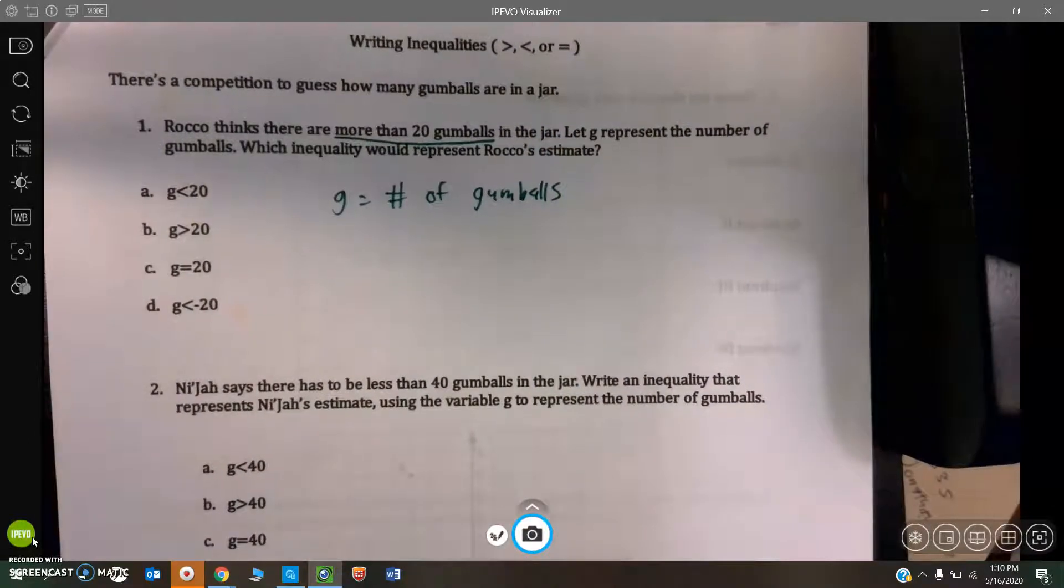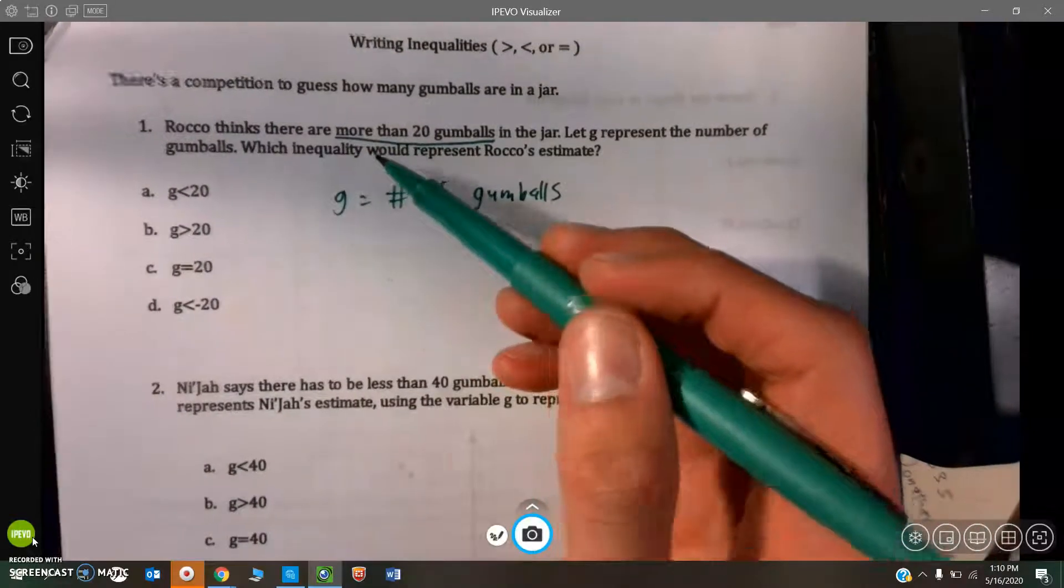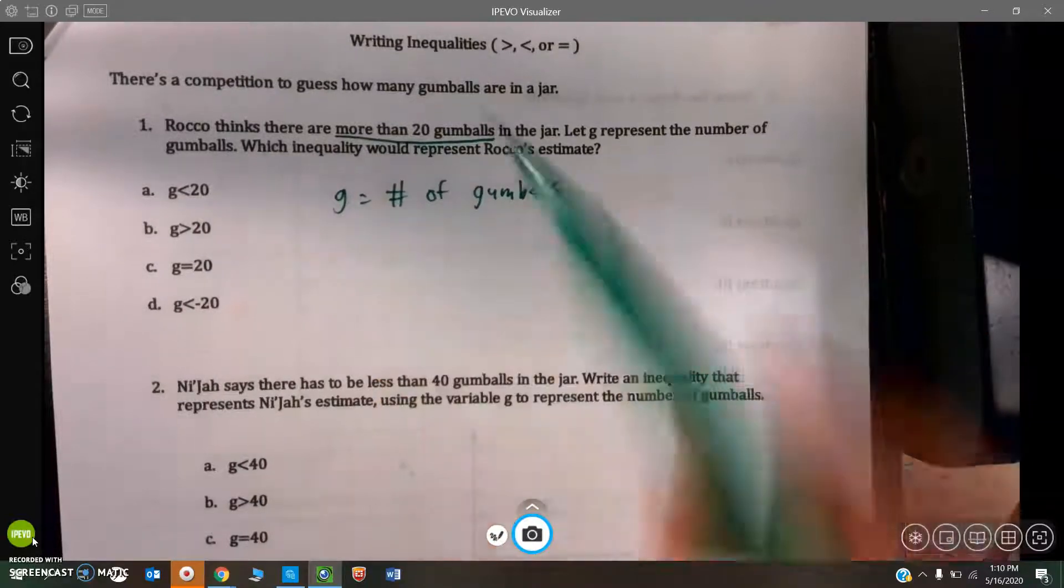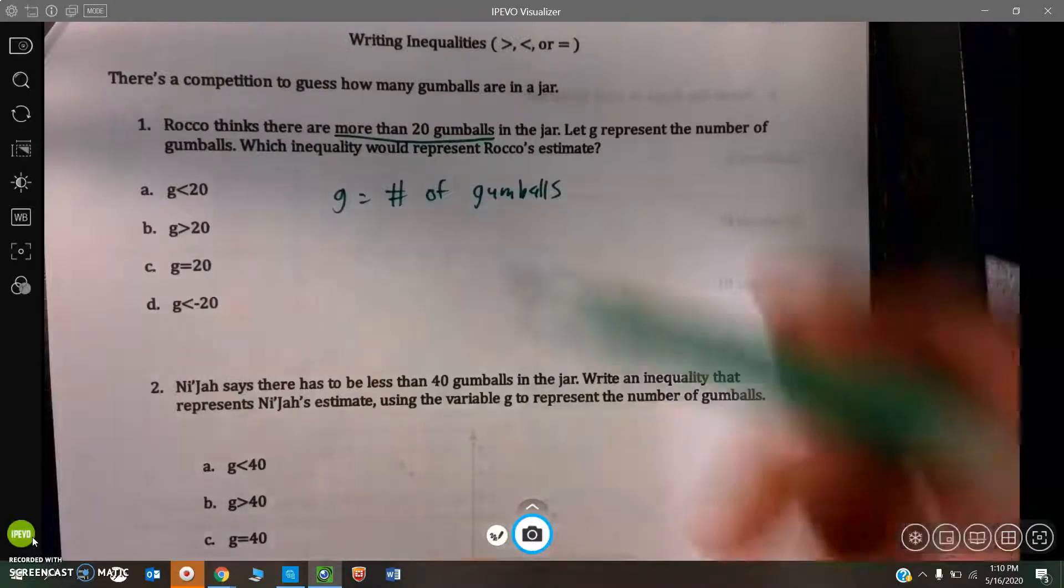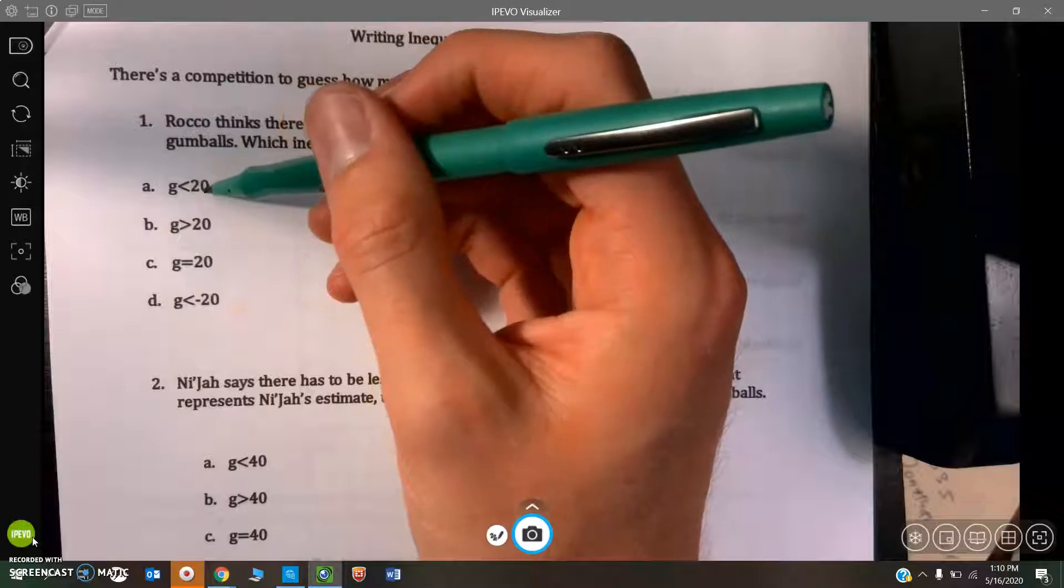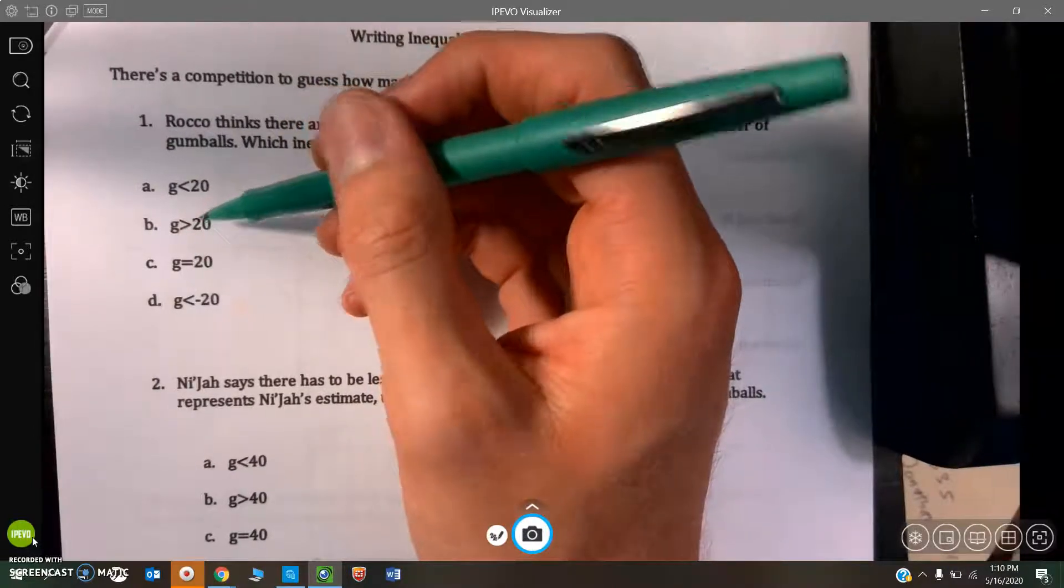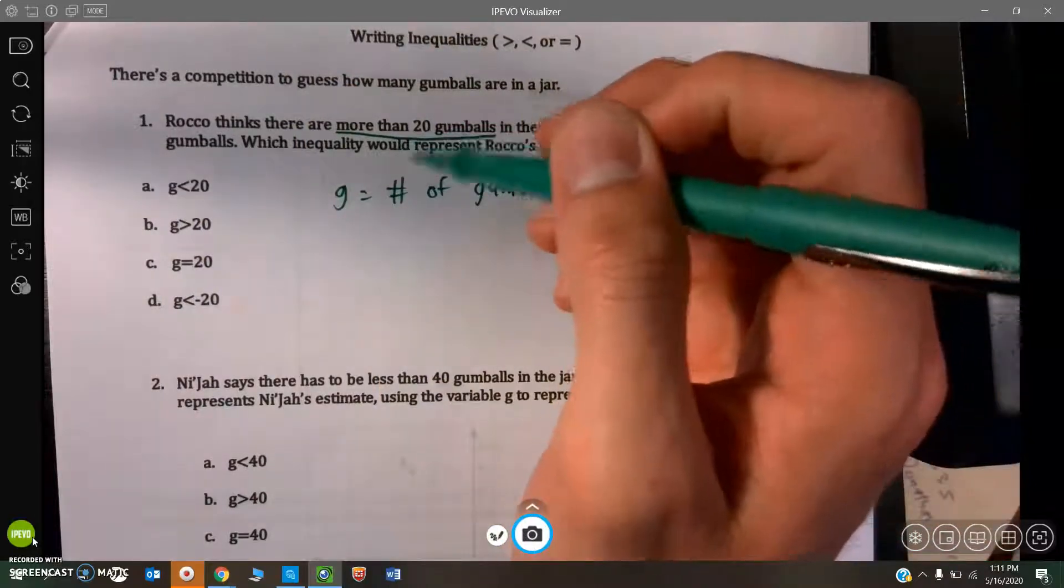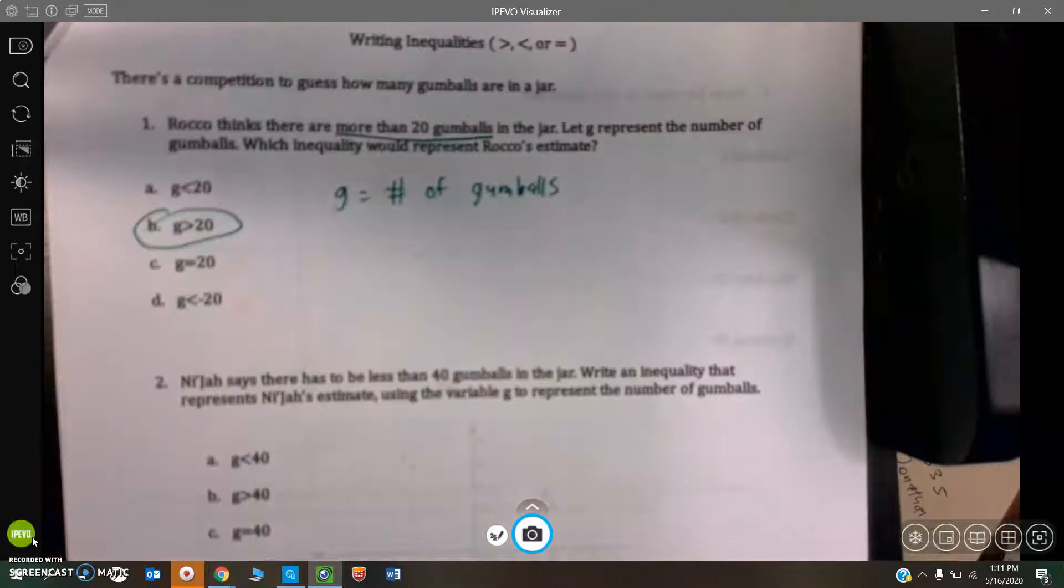We can take sentences that use words like more and less and then turn them into a mathematical inequality. In this case, Rocco thinks that there are more than 20 gumballs. Number of gumballs is greater than 20. He said more than 20 gumballs, so this would be the correct answer.